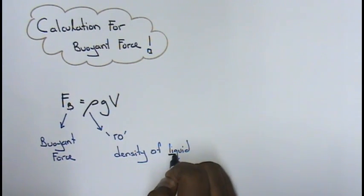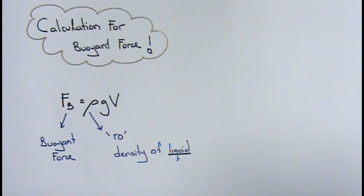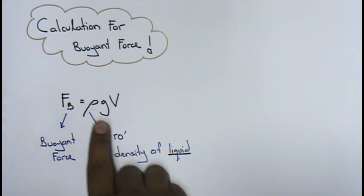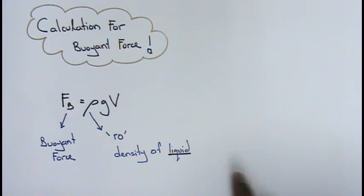Because you might get confused between density of object and density of liquid, so your rho over here is the density of liquid.